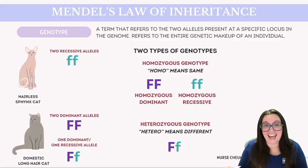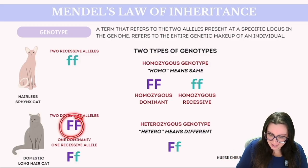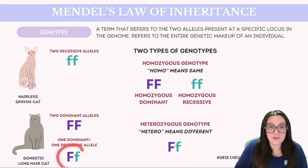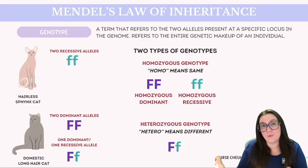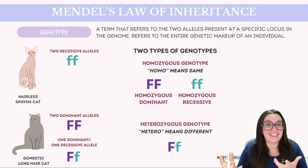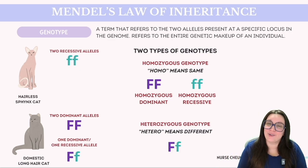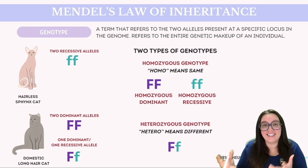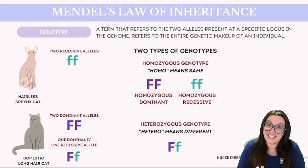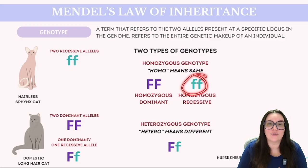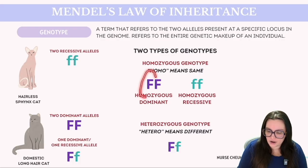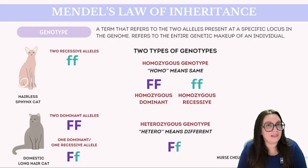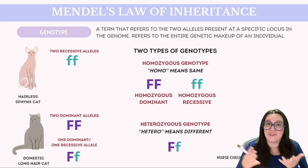If you were to observe a cat with hair, its genotype could either be homozygous dominant or it could be heterozygous — it's indiscernible just by their appearance. However, if we wanted to, we could test to clarify what the exact genotype is. In contrast, the genotype of a hairless sphinx cat is always going to be homozygous recessive, since the presence of any dominant allele — our uppercase F — would ultimately result in a furry phenotype.